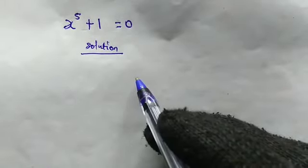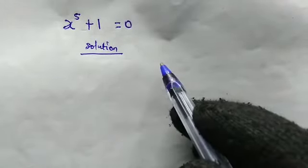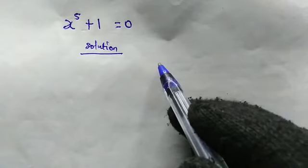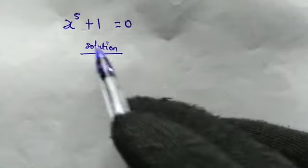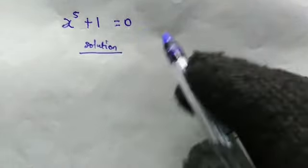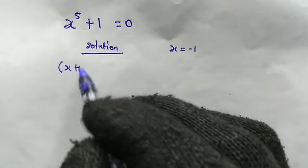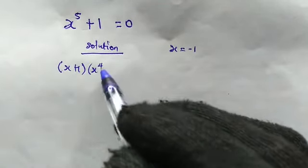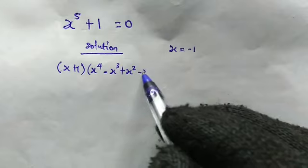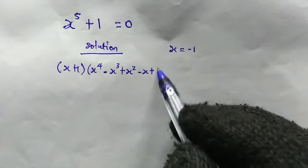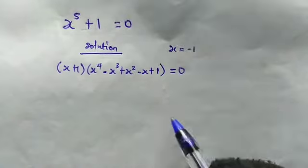Hello good viewers, welcome back once again. Today we're going to solve for the values of x in the following equation: x to the power of 5 plus 1, this is equal to 0. Obviously one can say that x is equal to negative 1. From the left, this can be factorized as (x + 1)(x⁴ − x³ + x² − x + 1) = 0.